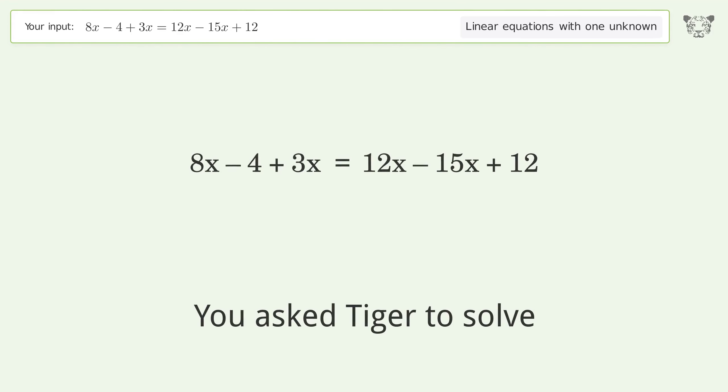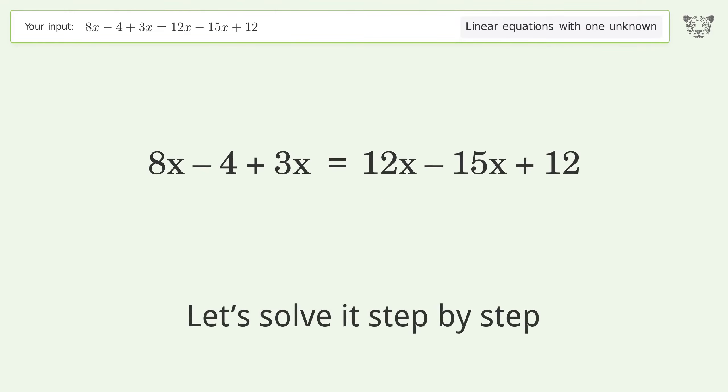You ask Tiger to solve this. It deals with linear equations with one unknown. The final result is x equals 8 over 7. Let's solve it step by step. Simplify the expression, group like terms.